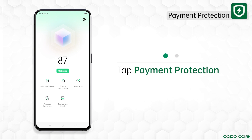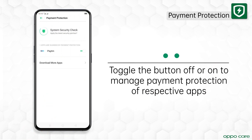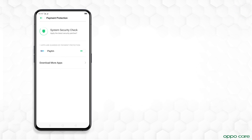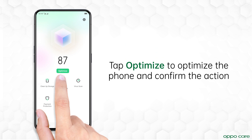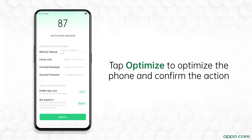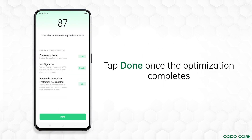To check and manage payment apps, tap 'Payment Protection' and toggle the button on if the app protection is off. Now it's time to optimize the phone in its simplest way — tap 'Optimize' and enjoy your fast-performing OPPO phone.